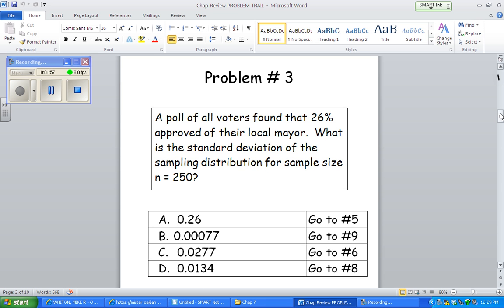Okay, problem 3 here. Poll of all voters found that 26% approved the local mayor. Okay, so they're giving me a percentage of an entire group of a population. That's a parameter. That is the population proportion. That's P.